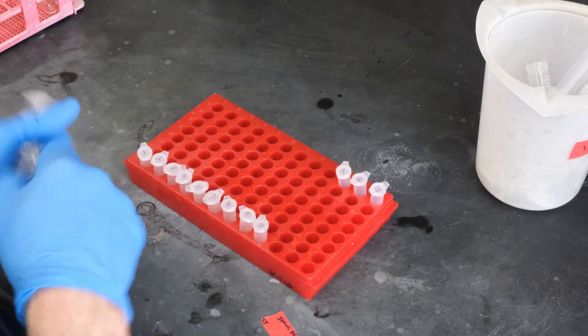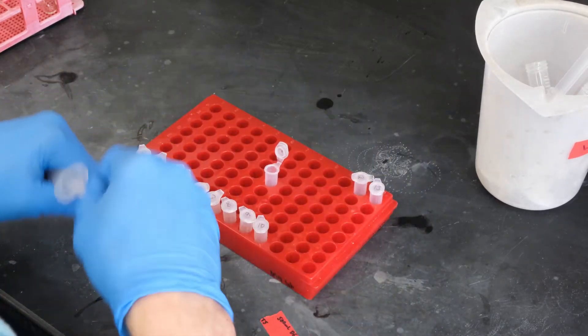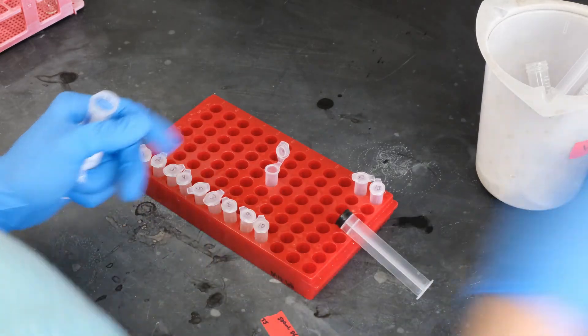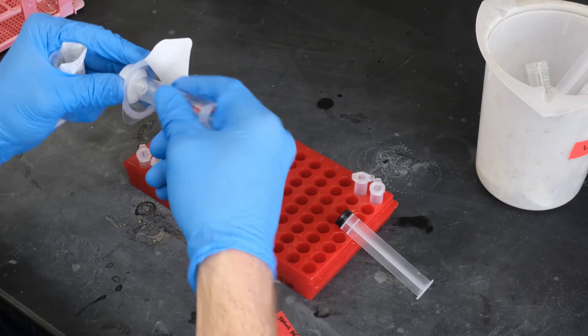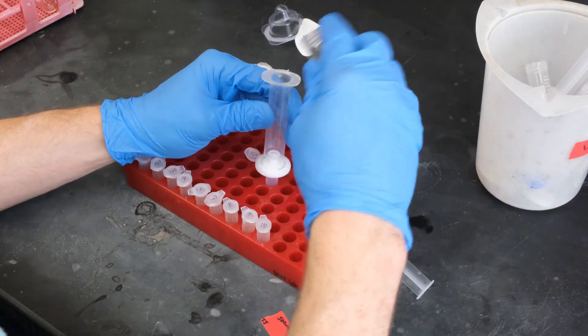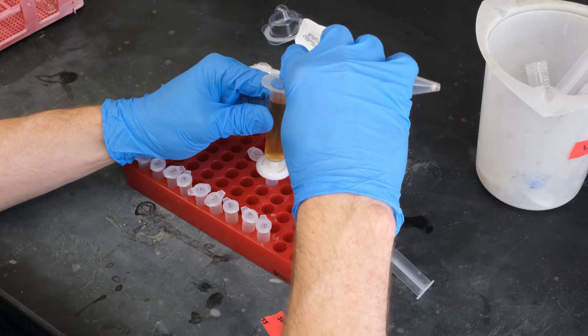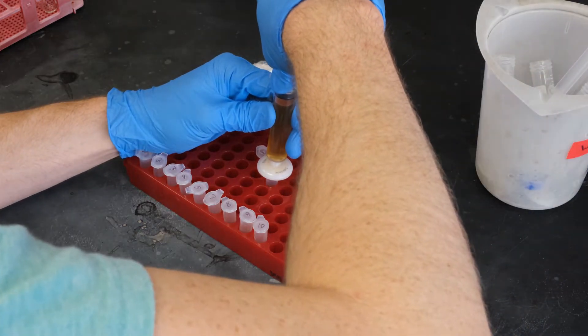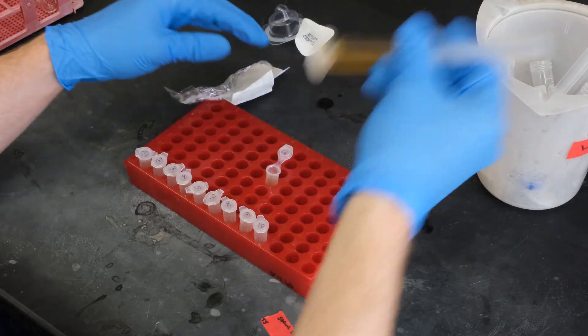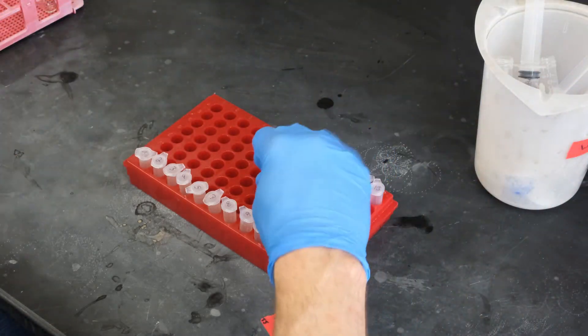To recover sample supernatants, attach a 0.22 micron filter to a 3 mil syringe and remove the plunger. Pour that supernatant from the 15 mil conical into the syringe, then push the sample from the filter into an epi tube or a new 15 mil conical vial if you want to collect a larger volume. Repeat this for all your samples.